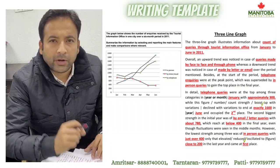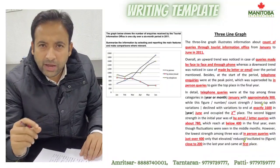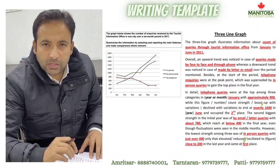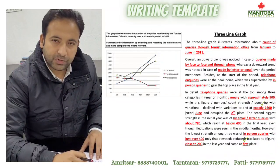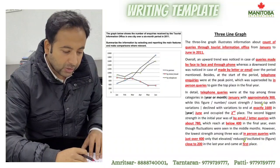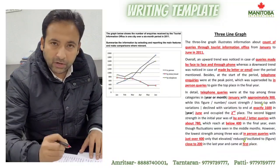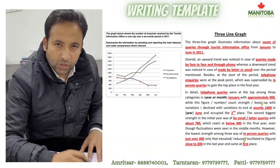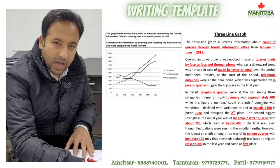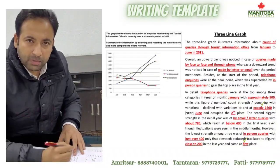Hello everyone, this is Rajin Sikri from Manitoba International. Today I'm going to fill a template of three line graphs. Look at the question — we must select the main title. The question is: 'The graph below shows the number of queries received by tourist office information in one city over a six-month period in 2011.' So the main title is: number of queries received through tourist information office.